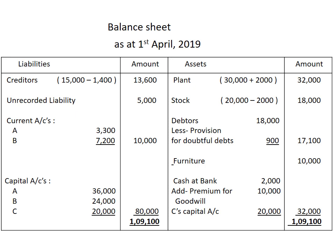We have come to the final step: opening a new balance sheet. On the liability side, the old creditor is Rs. 15,000 out of which Rs. 1,400 is not to be paid, so the new creditor is Rs. 13,600. The unrecorded liability of Rs. 5,000 is also recorded. Current accounts of A and B show Rs. 3,300 and Rs. 7,200 respectively, totalling Rs. 10,500. The new capital of A, B, and C is Rs. 36,000, Rs. 24,000, and Rs. 20,000 — totalling Rs. 80,000. Adding all liabilities gives a total balance of Rs. 1,09,100.